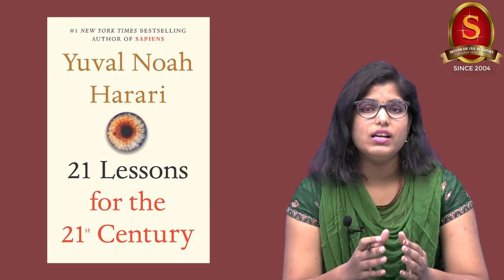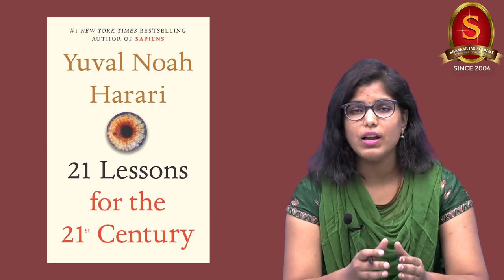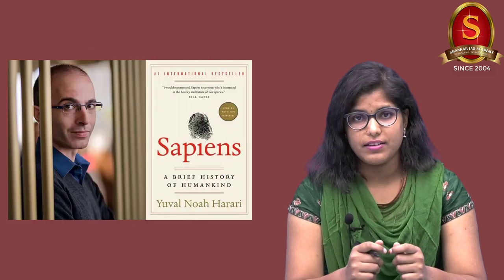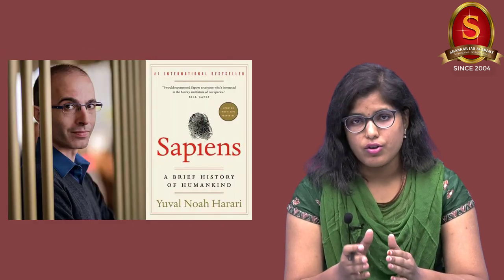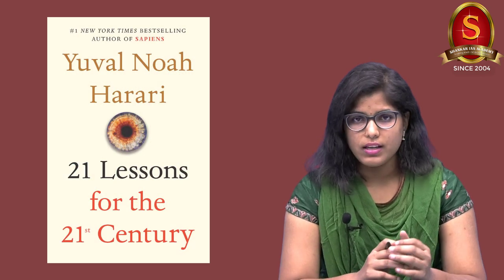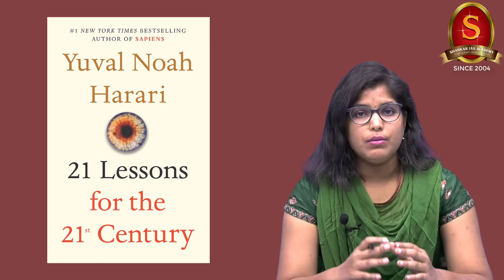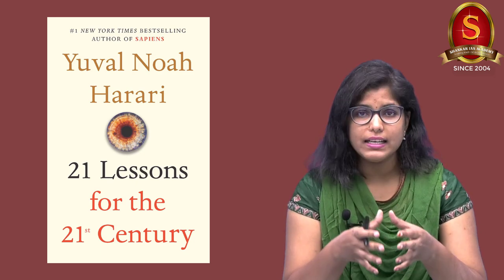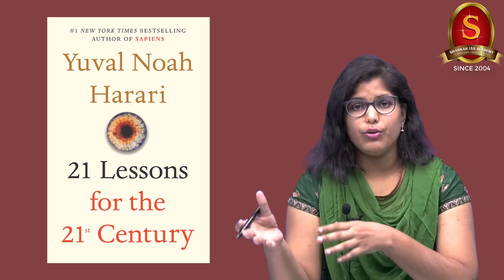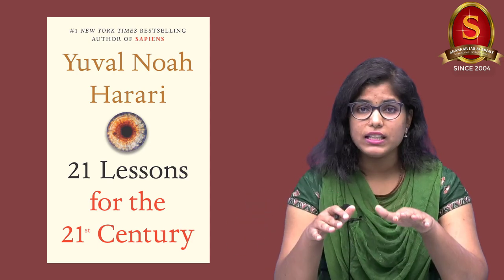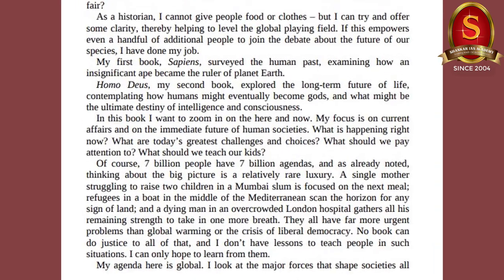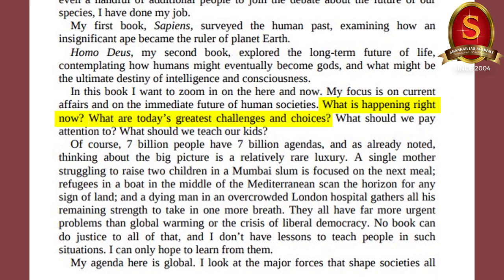Now let's move on to the next book, 21 Lessons for the 21st Century written by Yuval Noah Harari. He also does not require any introduction, being the author of the bestselling book Sapiens: A Brief History of Humankind. As the name itself suggests, this book gives 21 lessons for the 21st century. It tries to give clarity to readers about current events and the immediate future of human societies, thereby helping in leveling the global playing field. It addresses questions like: what is happening right now, what are today's greatest challenges and choices, and what should we pay attention to?